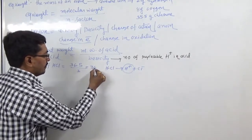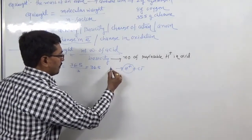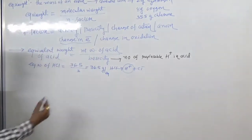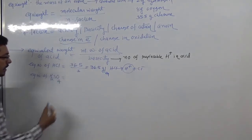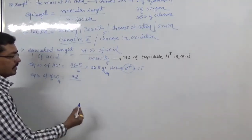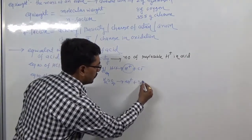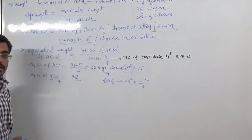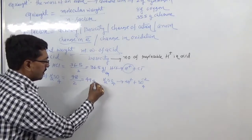So equivalent weight of HCl is 36.5 divided by 1, which gives 36.5 gram per equivalent. For sulfuric acid, molecular weight is 98, and the number of replaceable H⁺ ions is two, so basicity is two. Therefore 98 divided by 2 gives equivalent weight of 49 gram equivalent.